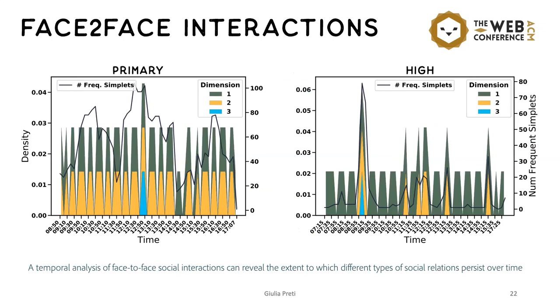The last experiment regards face-to-face interactions. Face-to-face interactions in public places are important to study because they can help understand how transmissible diseases propagate. And in this context, persistent simplets of higher dimensions indicate patterns of communication with higher risk, as they represent an interaction among more parties that took place frequently over time.